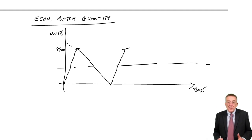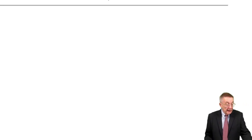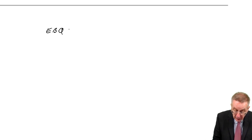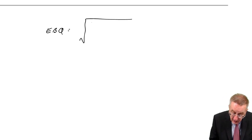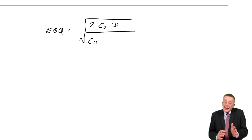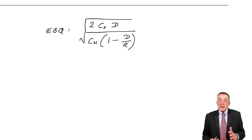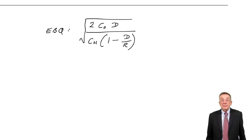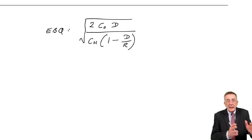So that's what's causing the problem, and as a result the formula changes a little bit. You're given it on the formula sheet, but it's also printed in the notes. The economic batch quantity — when we're making our own goods — is the square root of 2·C₀·D divided by C_H, but with an extra factor: times 1 minus D over R. That extra factor accounts for the fact that the average inventory is a little bit lower because of the delay in receiving goods.